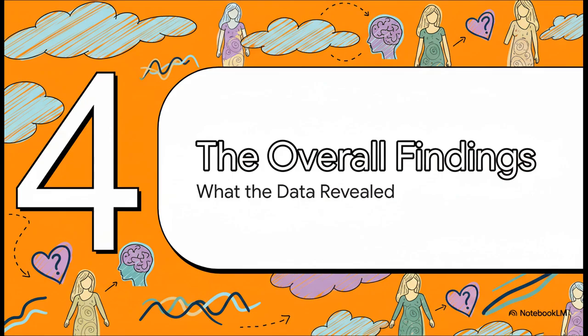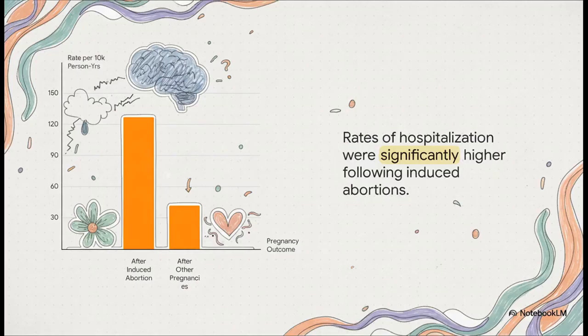So they've got this massive data set, this long timeline, and this clever way of adjusting for risk. What did they actually find? Let's get into the results for the whole group. The first big number that jumps out is pretty striking. The study reported that the rate of hospitalization for serious mental health problems was about 104 per 10,000 person years following an induced abortion. And don't worry, person years is just a way for scientists to track events in big groups over time. Compare that to the rate for other pregnancies, which was just 42. A pretty big difference right off the bat.